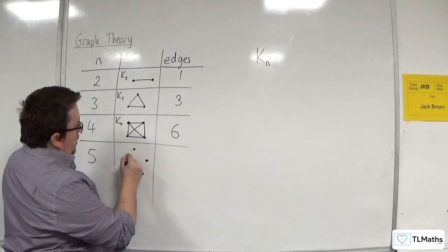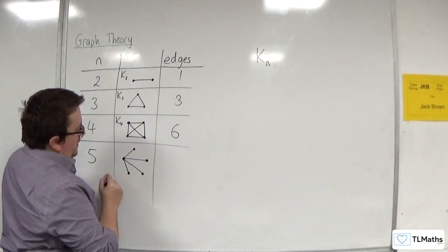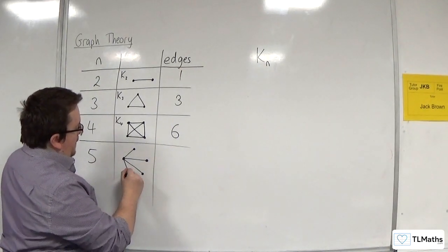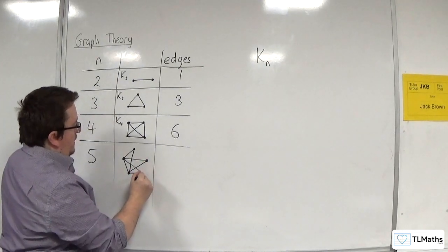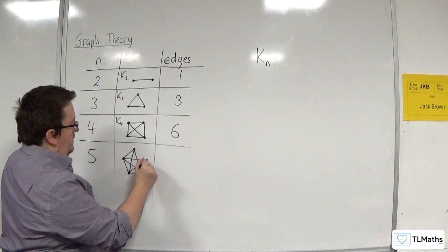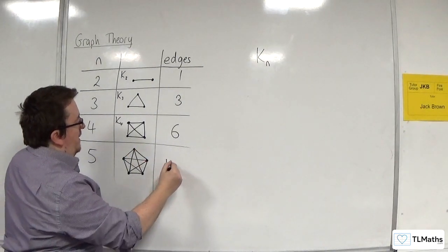So, we're going to have 1, 2, 3, 4. Then we're going to go to this one: 5, 6, 7. And from this one, 8, 9. And then from this one, 10. So, in total, there are 10.